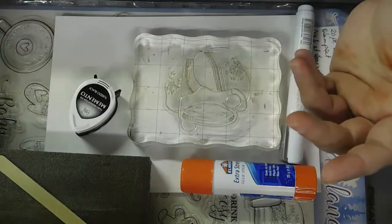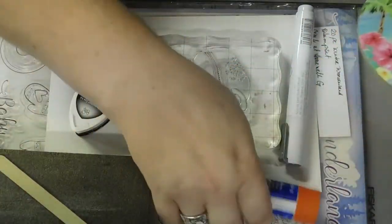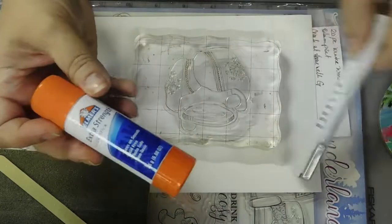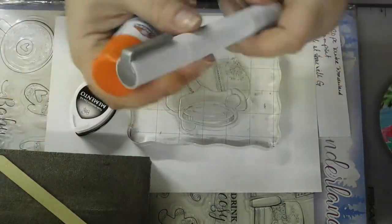So we're going to need the coasters, obviously. Some glue, you can use glue stick, glue pens, liquid glue, whatever you have for glue that suits you.